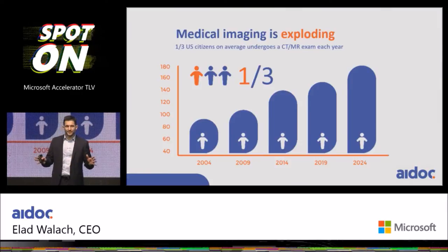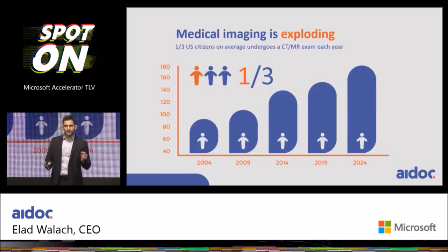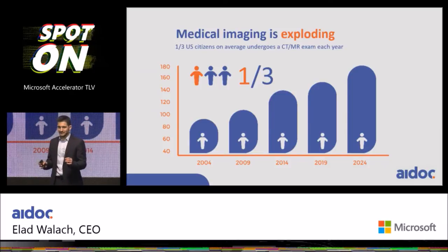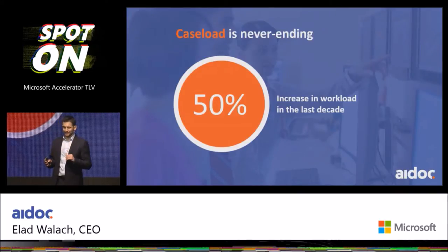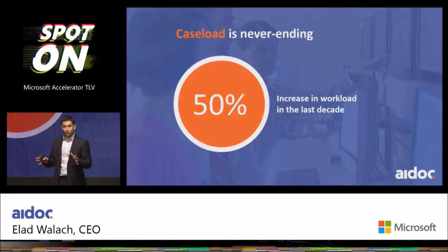In the last few years, the amount of imaging has increased dramatically. Today, more than 130 million CT and MRI scans are being done annually in the US alone. And while the amount of imaging has skyrocketed, the amount of radiologists has stayed about the same, which means that people today sometimes don't get treated on time just because nobody looked at the image fast enough.